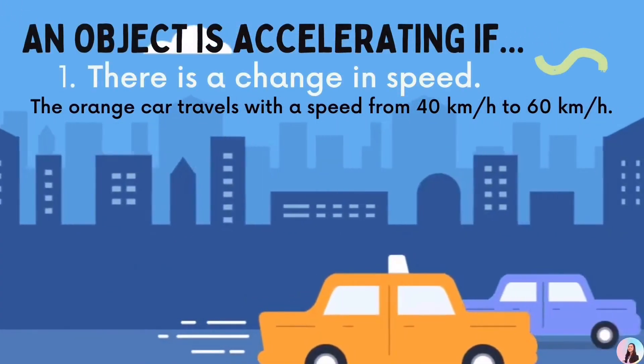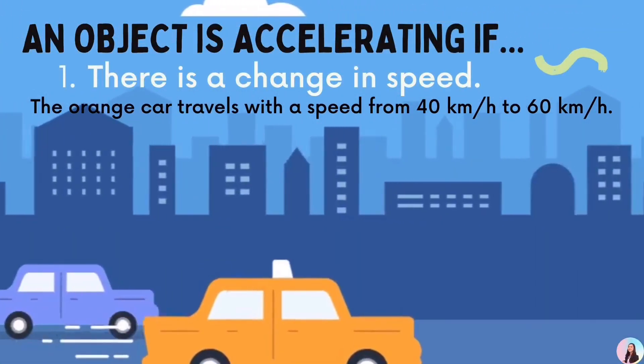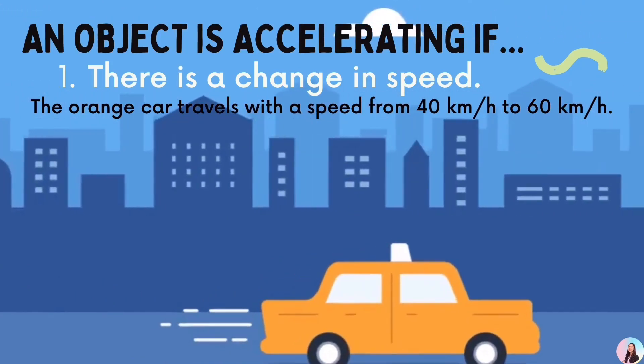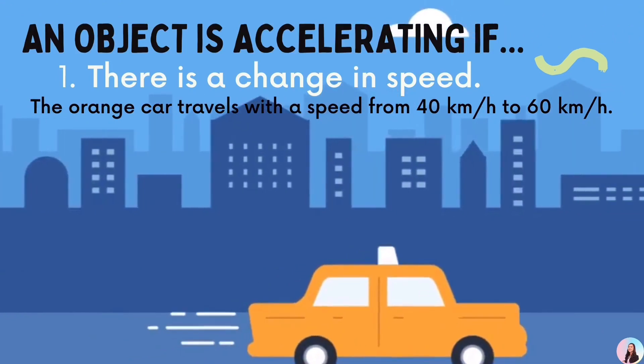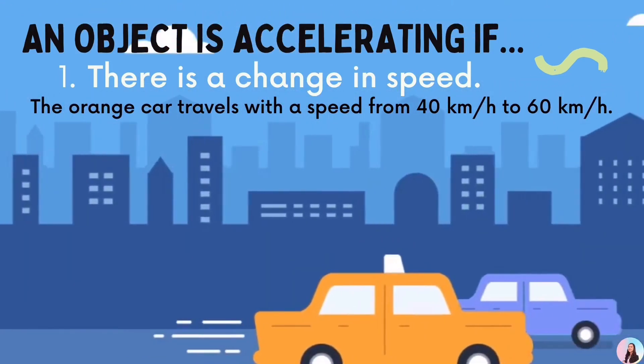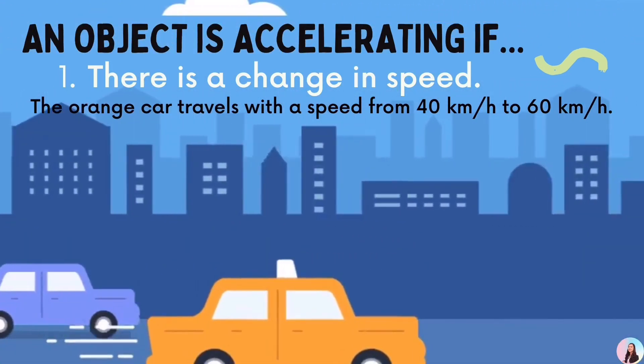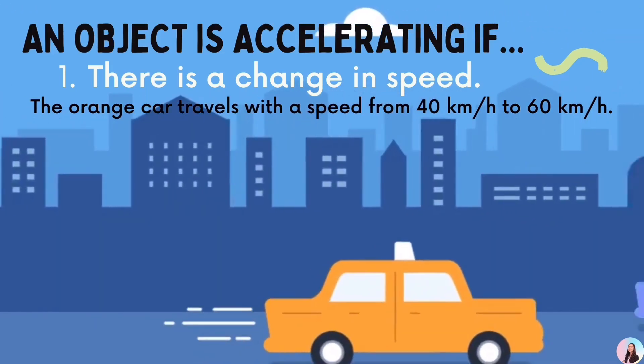An object is accelerating if, number 1, there is a change in speed. For example, the orange car travels with a speed from 40 kilometers per hour to 60 kilometers per hour.